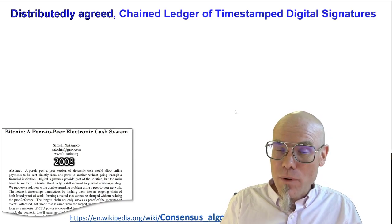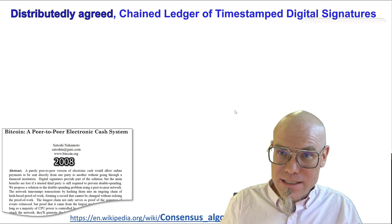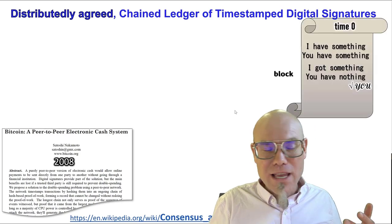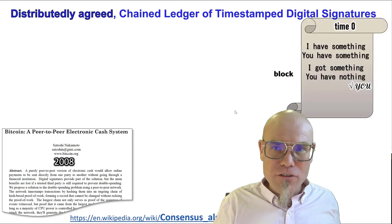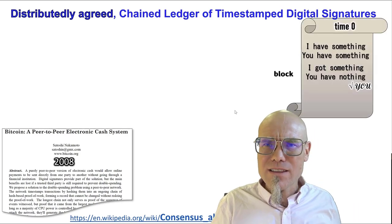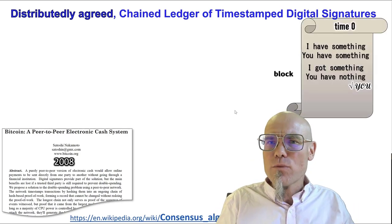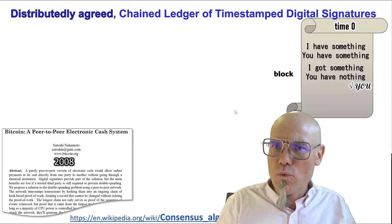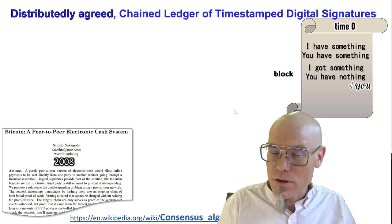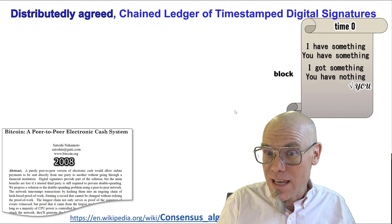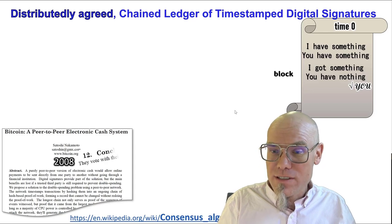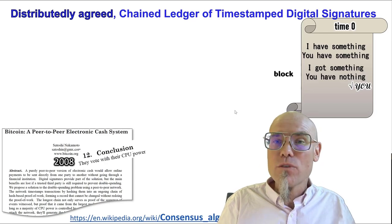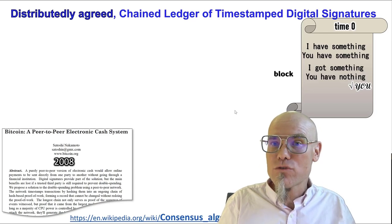Why do we need consensus in the blockchain? Well, we have a block — an information record — and the question is: what do we write on the next block? We might disagree on that. So with a consensus algorithm, we agree on what to write.